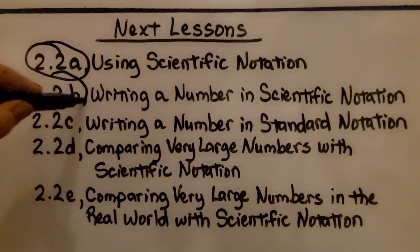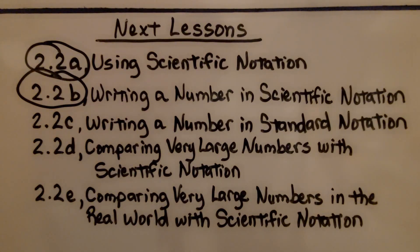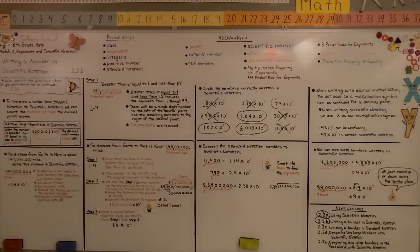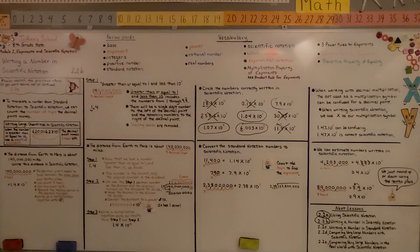We're finished with part B. We're going to move on to the next part, 2.2c — writing a number in standard notation. It's very easy to just count the hops and use that number as your exponent, your power of 10. But it is good to know how to do the long division way in case that comes up on a test or homework. Have a wonderful day and join me for 2.2c. Bye.